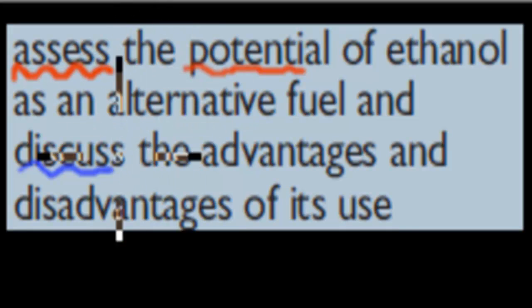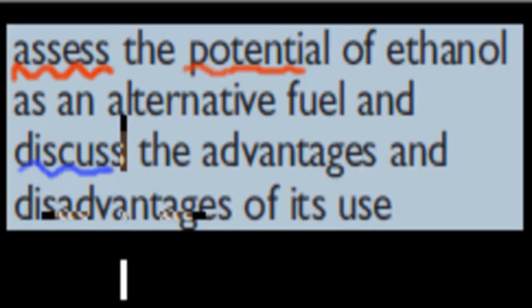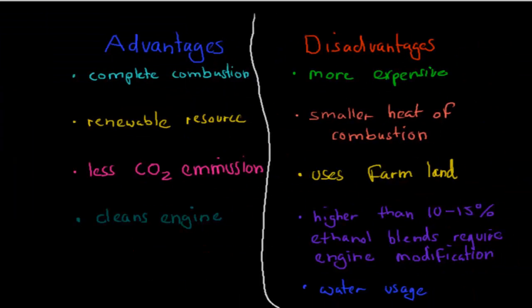First, before we start talking about whether it's going to be used more and more in the future or not, we should talk about the advantages and disadvantages. So, some of the advantages were that it had complete combustion. What that means is, if we have ethanol, complete combustion means that we go from ethanol to CO2, so complete combustion, everything, all those carbons in ethanol go into CO2.